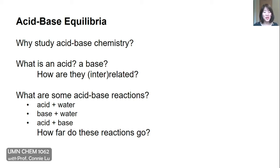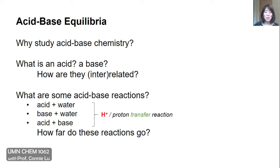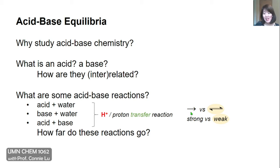We're also going to talk about what reactions they can undergo — reactions where you dissolve an acid in water, or a base in water, or directly react an acid with a base. And like with all equilibrium topics, we're interested in understanding how far these reactions go to completion. For most acid-base reactions, they involve the transfer of a proton, or an H+ ion. If the acid or base is strong, these reactions go to completion, indicated by a right-handed arrow. If they are weak, they set up an equilibrium, represented by our equilibrium arrow.